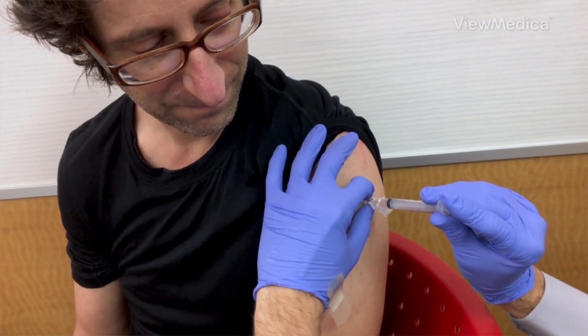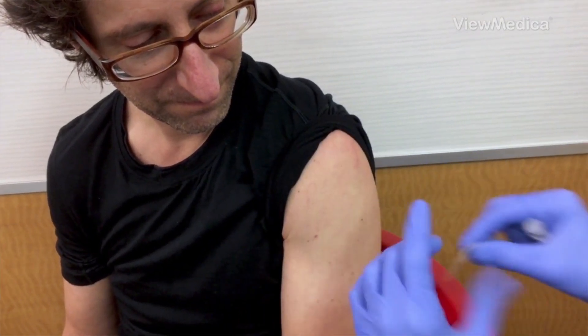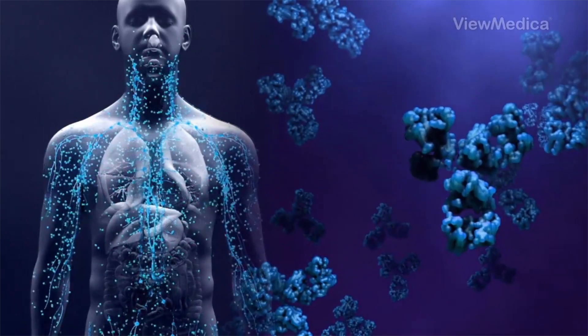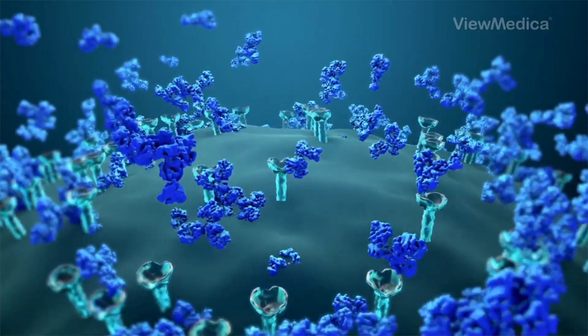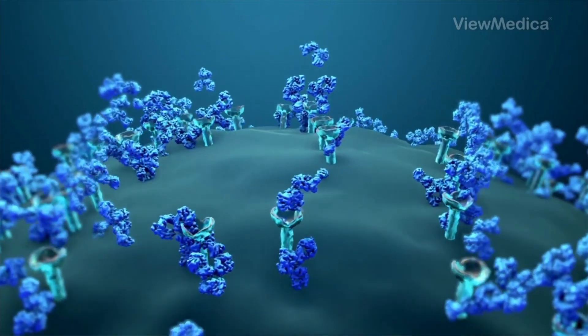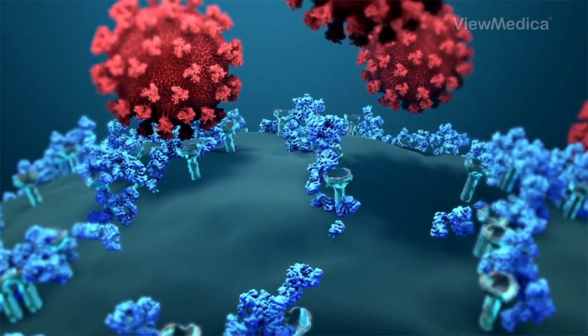When you get this vaccine, your immune system responds. It creates special molecules called antibodies to fight the germ. Later, if the live germ gets in your body, you have the antibodies needed to fight it off.